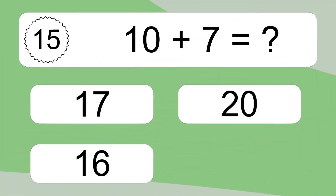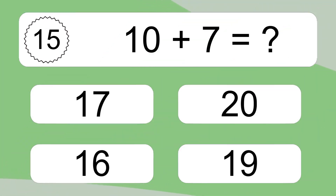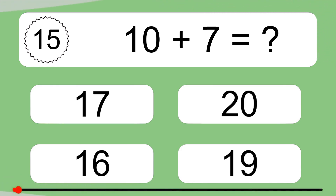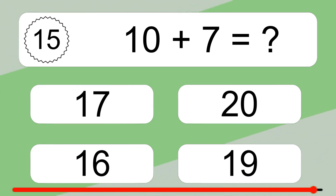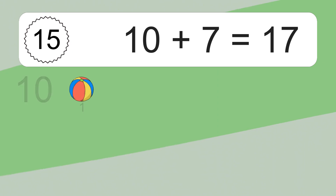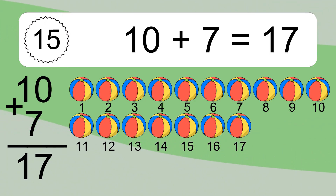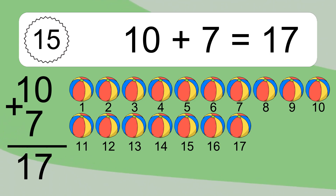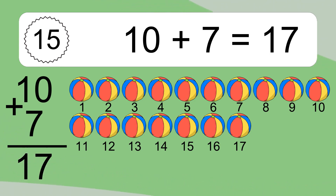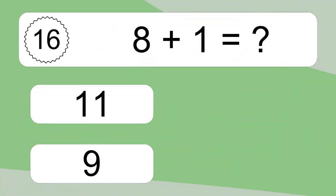10 plus 7 equals what? 10 plus 7 equals 17. Let's count it: 1, 2, 3, 4, 5, 6, 7, 8, 9, 10, 11, 12, 13, 14, 15, 16, 17. 8 plus 1 equals what?